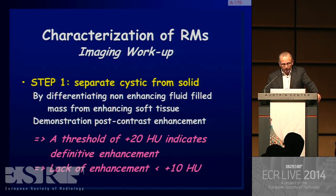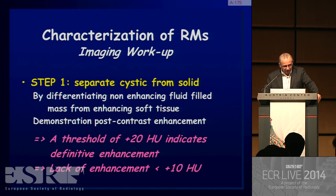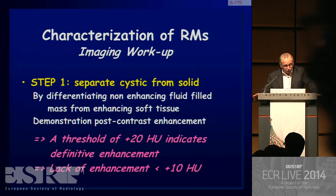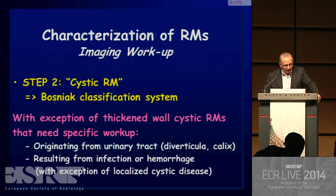The separation is done by differentiating the non-enhancing fluid-filled mass from the enhancing soft tissue, using contrast administration — whether contrast-enhanced CT, contrast-enhanced MRI, or contrast-enhanced ultrasound. A threshold of 20 Hounsfield units indicates definitive enhancement, while below 10 Hounsfield units indicates lack of enhancement. However, there is a gap between 10 and 20 Hounsfield units where other techniques play a key role.